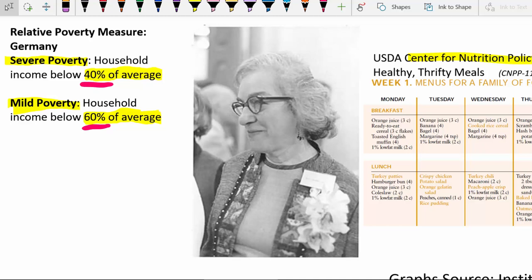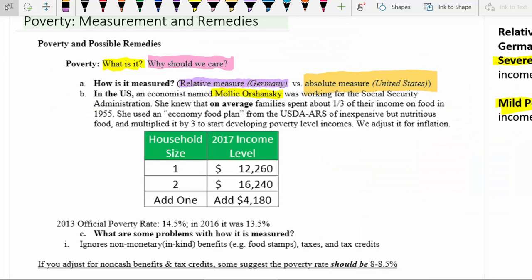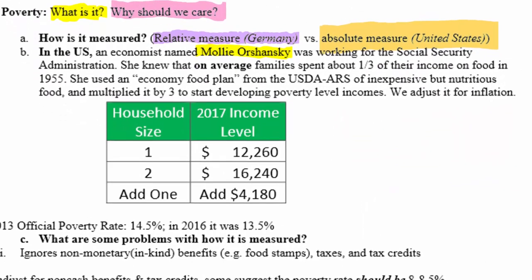Molly was given the task of figuring out a way to define who's in poverty and who's not. She read economic research using expenditure diaries — records of how much people spend on different things over a week, month, or year. From these studies, she knew that on average in the United States at that time, lower to moderate income families spent about a third of their income on food.